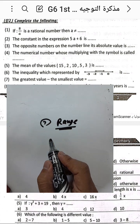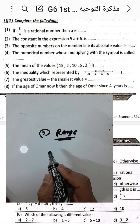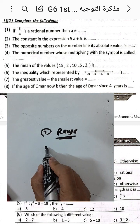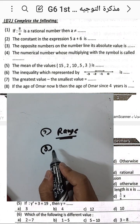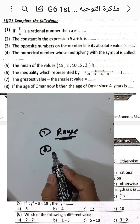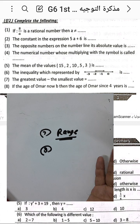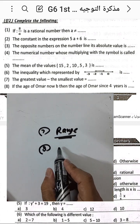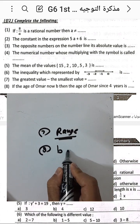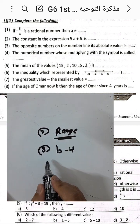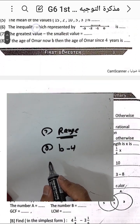Question number eight: if the age of Omar now is p, then the age of Omar four years ago will be p subtract 4.